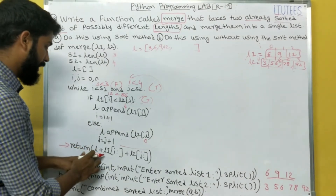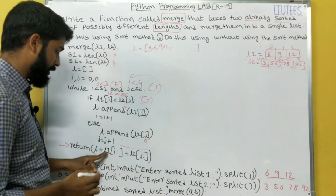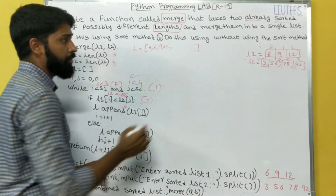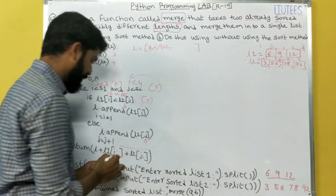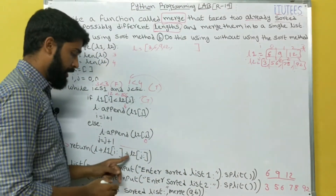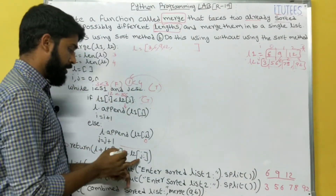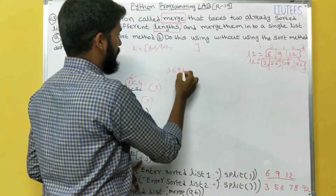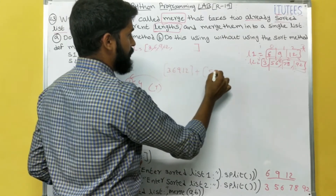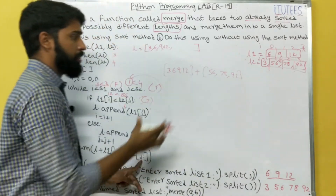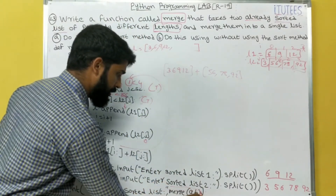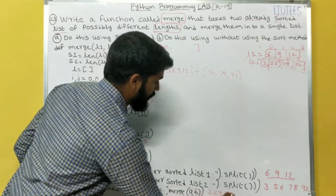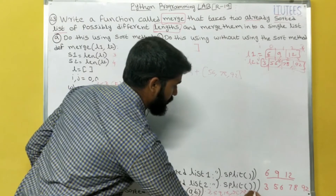We return L plus L1[i:] plus L2[j:]. L currently contains 3, 6, 9, 12. L1[i:] with i=3 means L1[3:] which is empty — nothing to add. L2[j:] with j=1 means L2[1:] which is 56, 78, 92. So the final result is 3, 6, 9, 12, 56, 78, 92. That is the output.